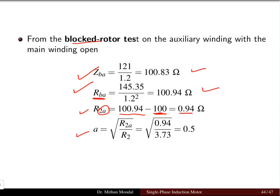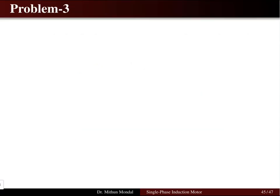The turns ratio 'a' is calculated as the square root of the auxiliary winding rotor resistance R2a divided by the main winding rotor resistance R2. With R2a = 0.94 ohms and R2 = 3.73 ohms, taking the square root gives a turns ratio of 0.5. Thus all equivalent circuit parameters are obtained using the test readings.